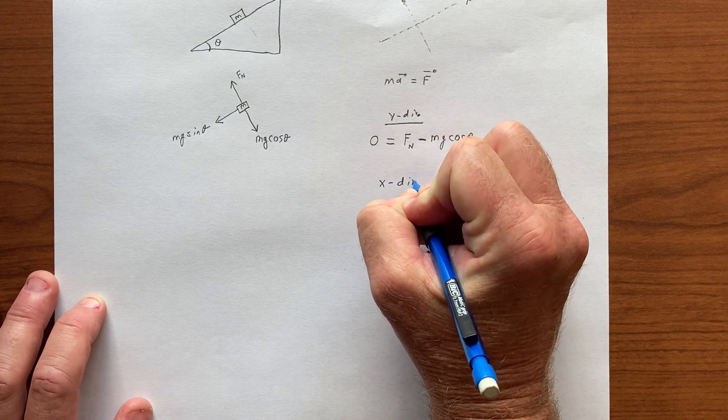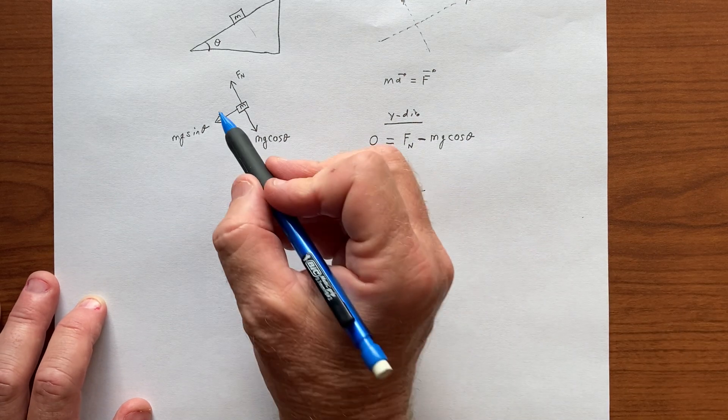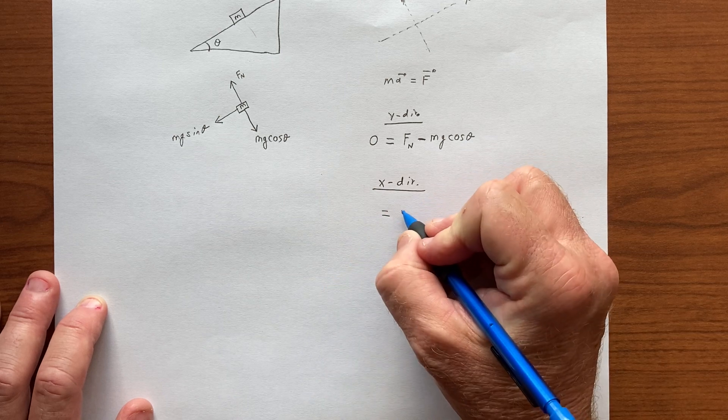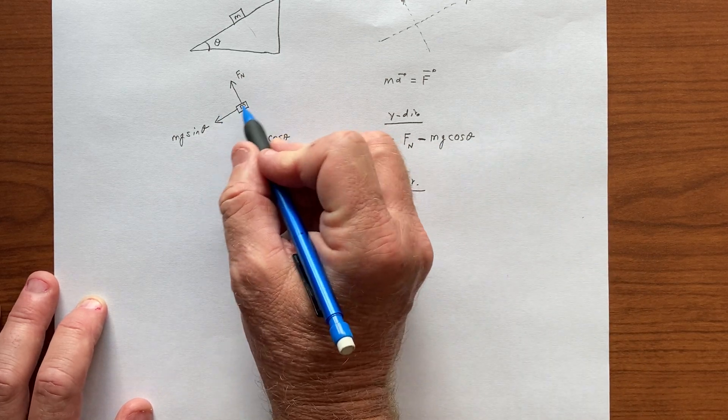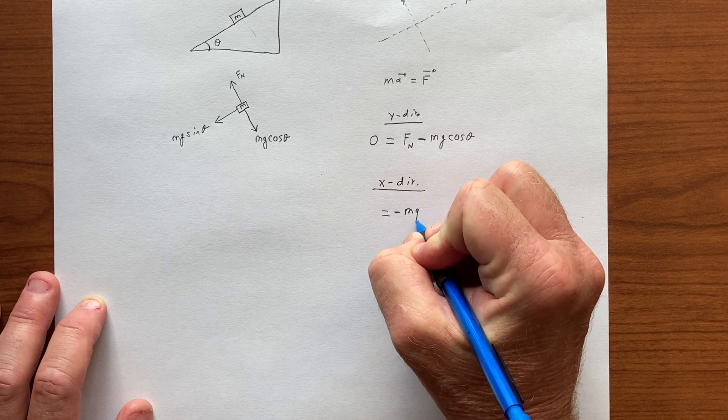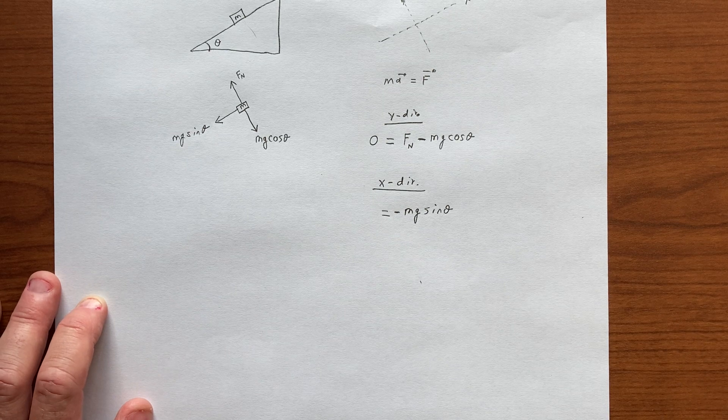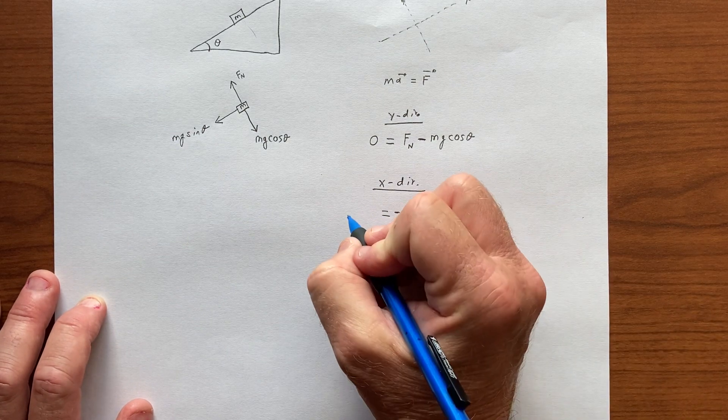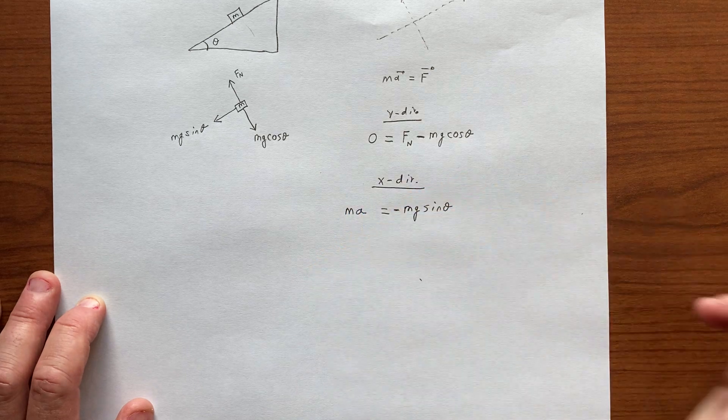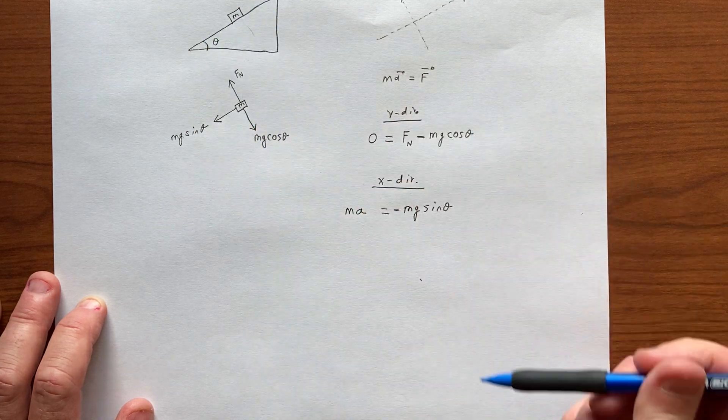For the tilted horizontal direction, or the tilted x direction, all we have is one force. So the right-hand side is m, and our convention is to the left is negative, so we might as well put a minus sign there, minus mg sine of theta. Then we can say the left-hand side is the max, so ma, where the a means the tilted horizontal acceleration.